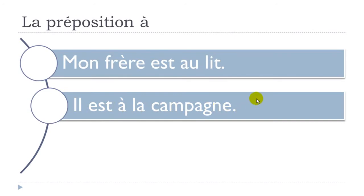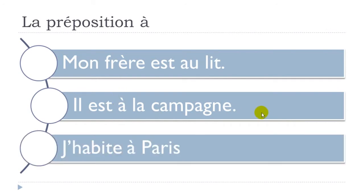In that case we use the preposition À. The last example for 'in': if you want to introduce a town, you use 'habiter' (to live) — 'j'habite à Paris'. You can see we don't put any article, just the name of the town. So 'j'habite à Paris' means 'I live in Paris'.